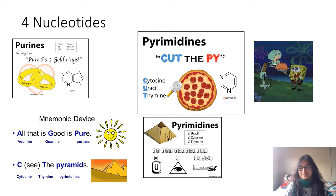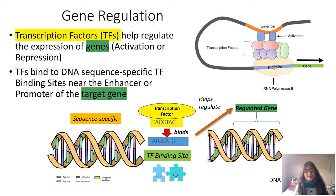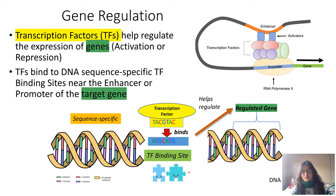A little bit about gene regulation. There are transcription factors and they help regulate the expression of genes — the activation or the repression of various genes. When they bind to regulatory elements like enhancers or promoters, they help recruit other proteins as well, and that ends up bringing RNA polymerase to the site of the promoter, leading to transcription of the gene. Transcription factors have sequence-specific motifs that they bind to — A binds with T, C with G, G with C. It's very sequence-specific — the transcription factor binding site. You can think of it like puzzle pieces along the DNA.